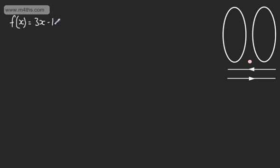This is a linear one-to-one function. If we restrict the domain, we could say now that x will be equal to 1, 2, 3, and 4. So all I'm doing is taking integer values.